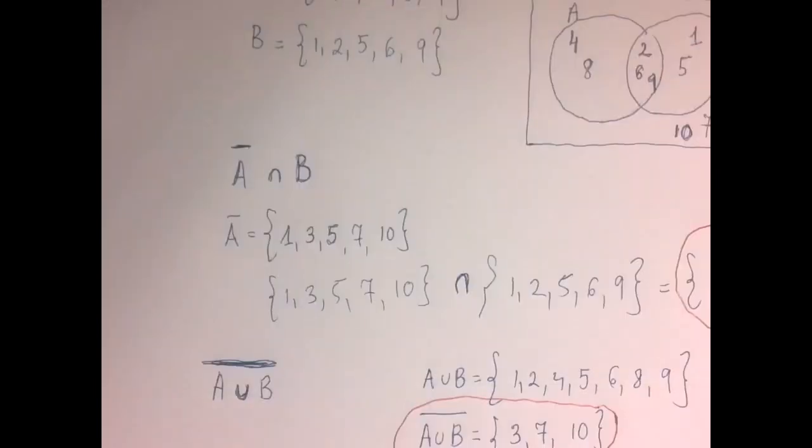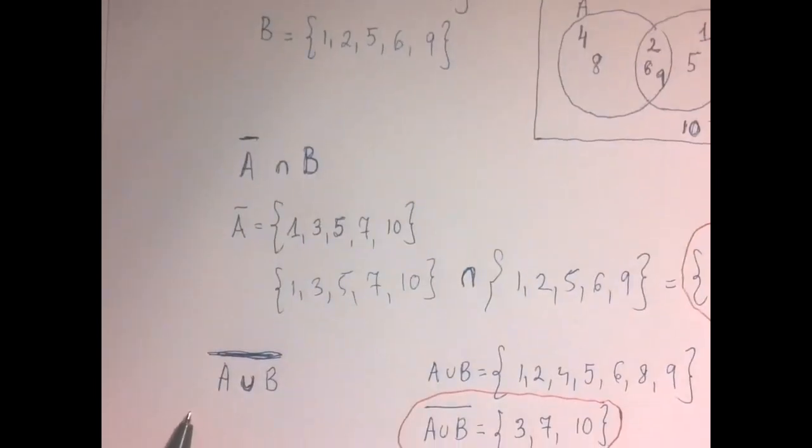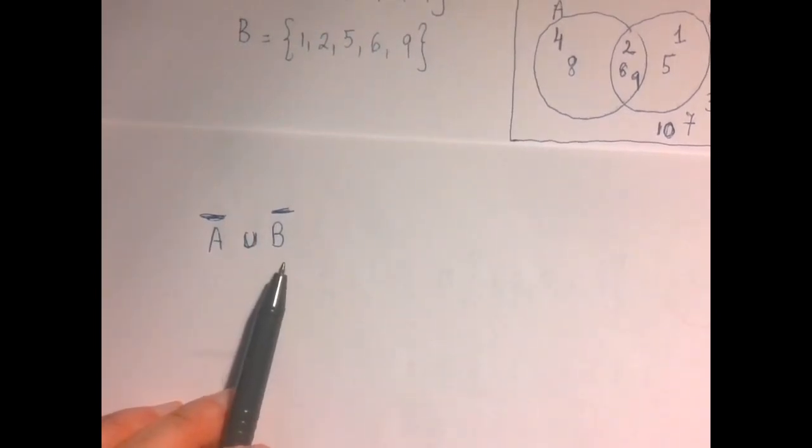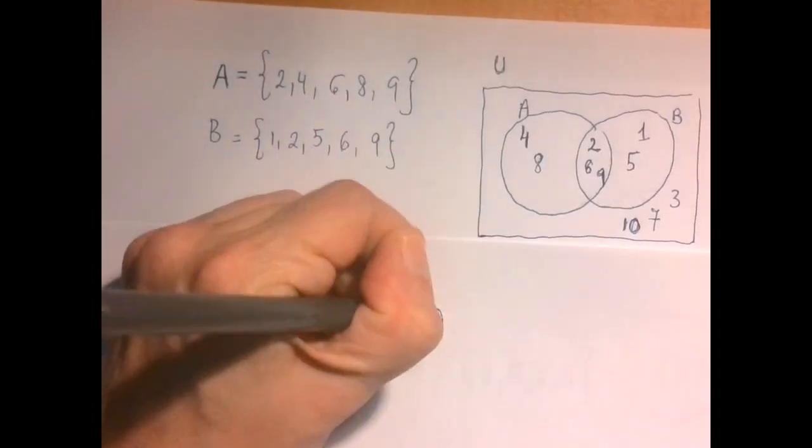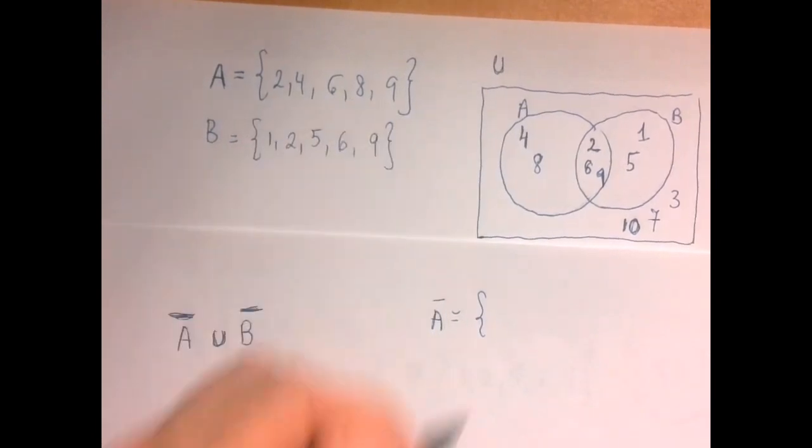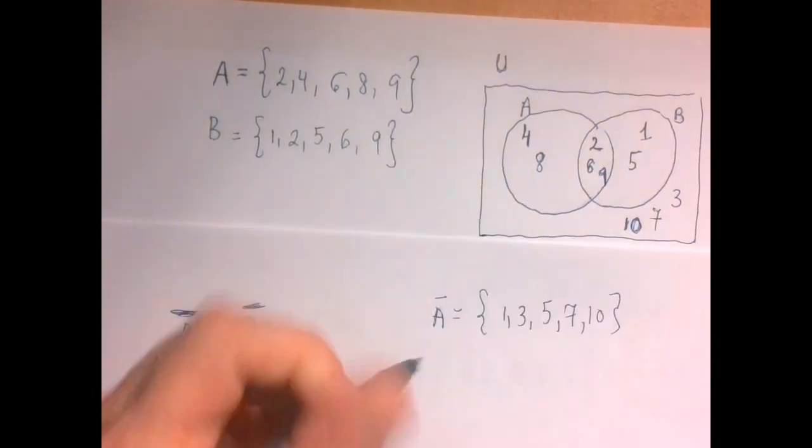Okay, next up. So the previous problem was the complement of A union B. This here is the union of the complements. Now we're going to take the complement of A, the complement of B, and then take the union. Given what A is, again, the complement of A is everything except for these 5 things, so that's 1, 3, 5, 7, 10.